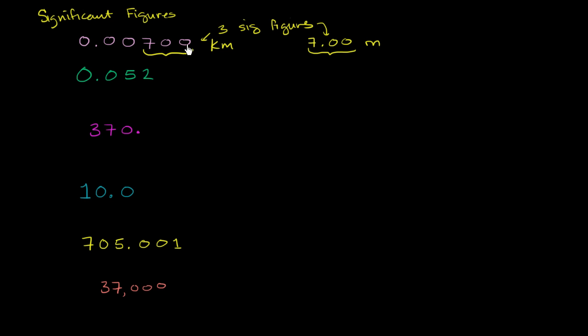And the reason why we're counting these trailing zeros is that whoever wrote this number didn't have to write them down. They wrote them down to explicitly say, look, I measured this far. If they didn't measure this far, they would have just left these zeros off and they would have just told you 7 meters, not 7.00.